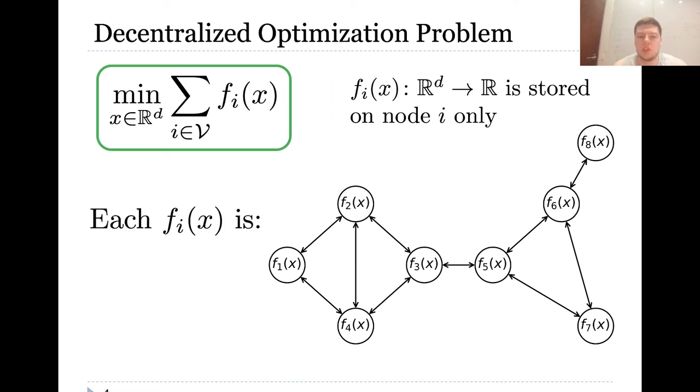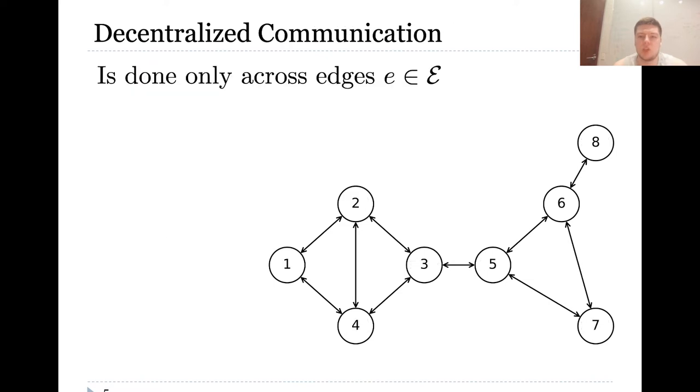In our paper we focus on the case when each function f_i is L-smooth and mu strongly convex. In our setup decentralized communication is done only across edges of the network. For example, node 2 can communicate across edges with nodes 1, 3 and 4.